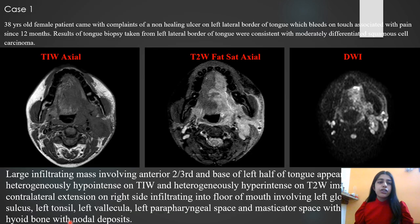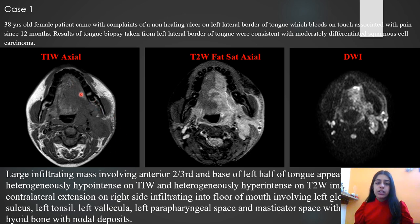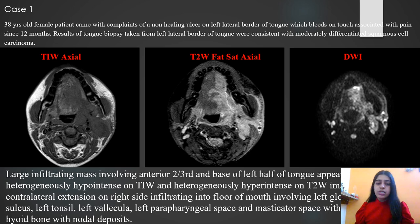The first case is of a female who presented with a non-healing ulcer on the left lateral border of the tongue, which bled on touch. Histopathological studies revealed a moderately differentiated squamous cell carcinoma. The MRI images show a large infiltrating mass involving the anterior two-thirds and base of the tongue, appearing heterogeneously hypointense on T1-weighted images and heterogeneously hyperintense on T2-weighted images, with contralateral extension to the right side infiltrating into the floor of mouth, glossopharyngeal sulcus, left tonsil, vallecula, left parapharyngeal space, and masticator space, with hyoid bone erosions and nodal deposits.